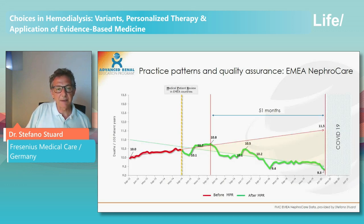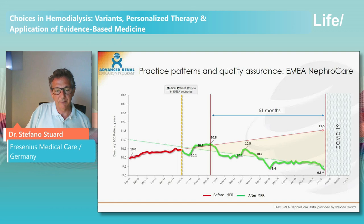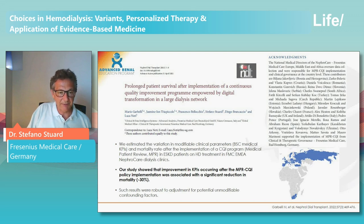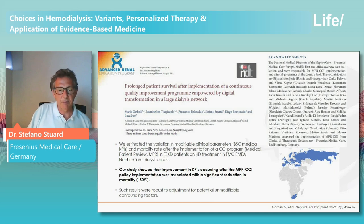In terms of mortality: by applying our quality assurance governance system called Medical Patients Review, we were able to reduce the mortality rate in our dialysis population. We reached a peak in September 2015 of 10.8%, and before the COVID-19 pandemic this value was 9.3%. We published data showing that by implementing digital transformation and our Medical Patients Review quality assurance program, we reduced mortality in our dialysis population by 30% — which is in direct conflict with the two manuscripts I mentioned at the beginning of this presentation.